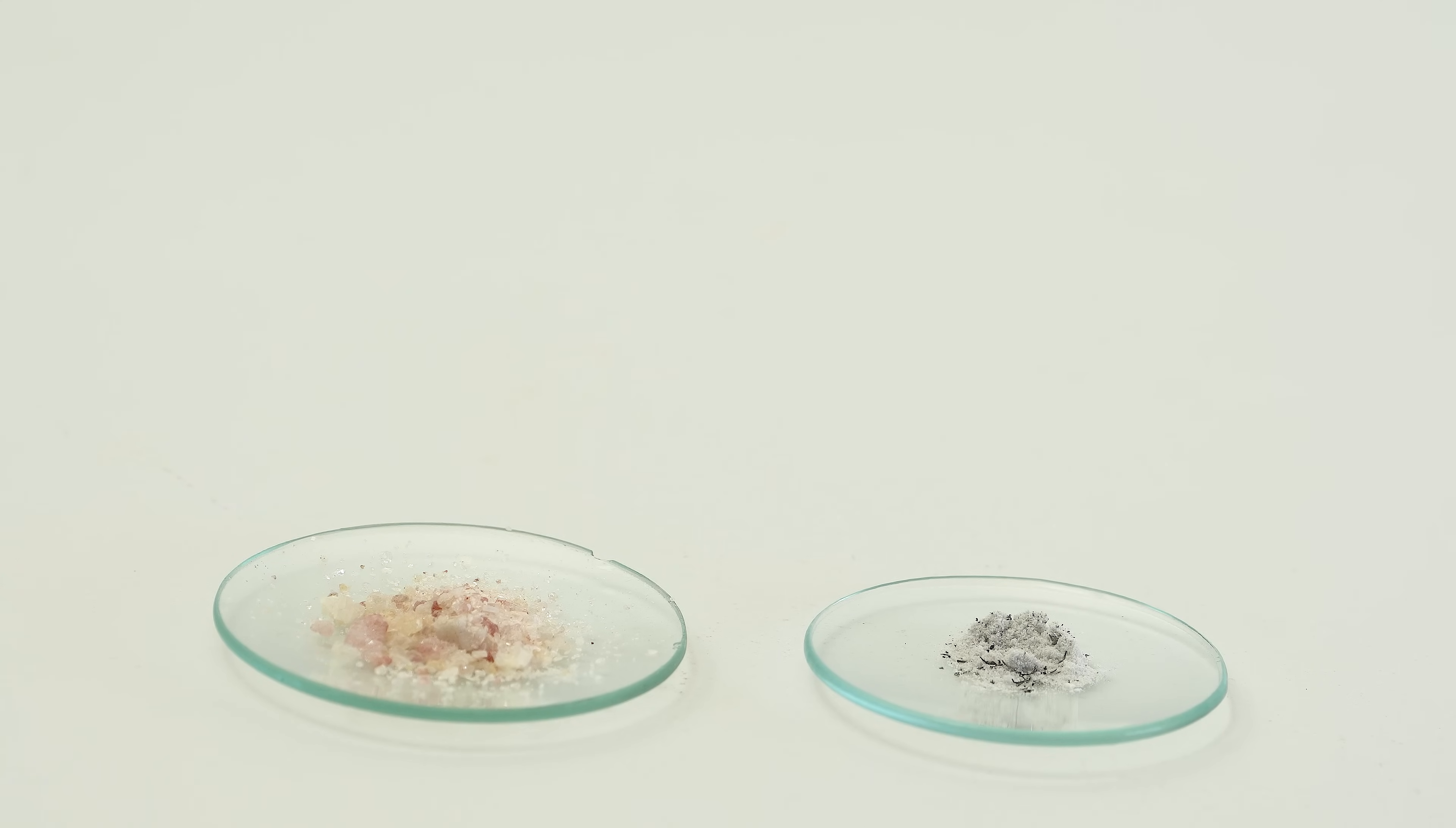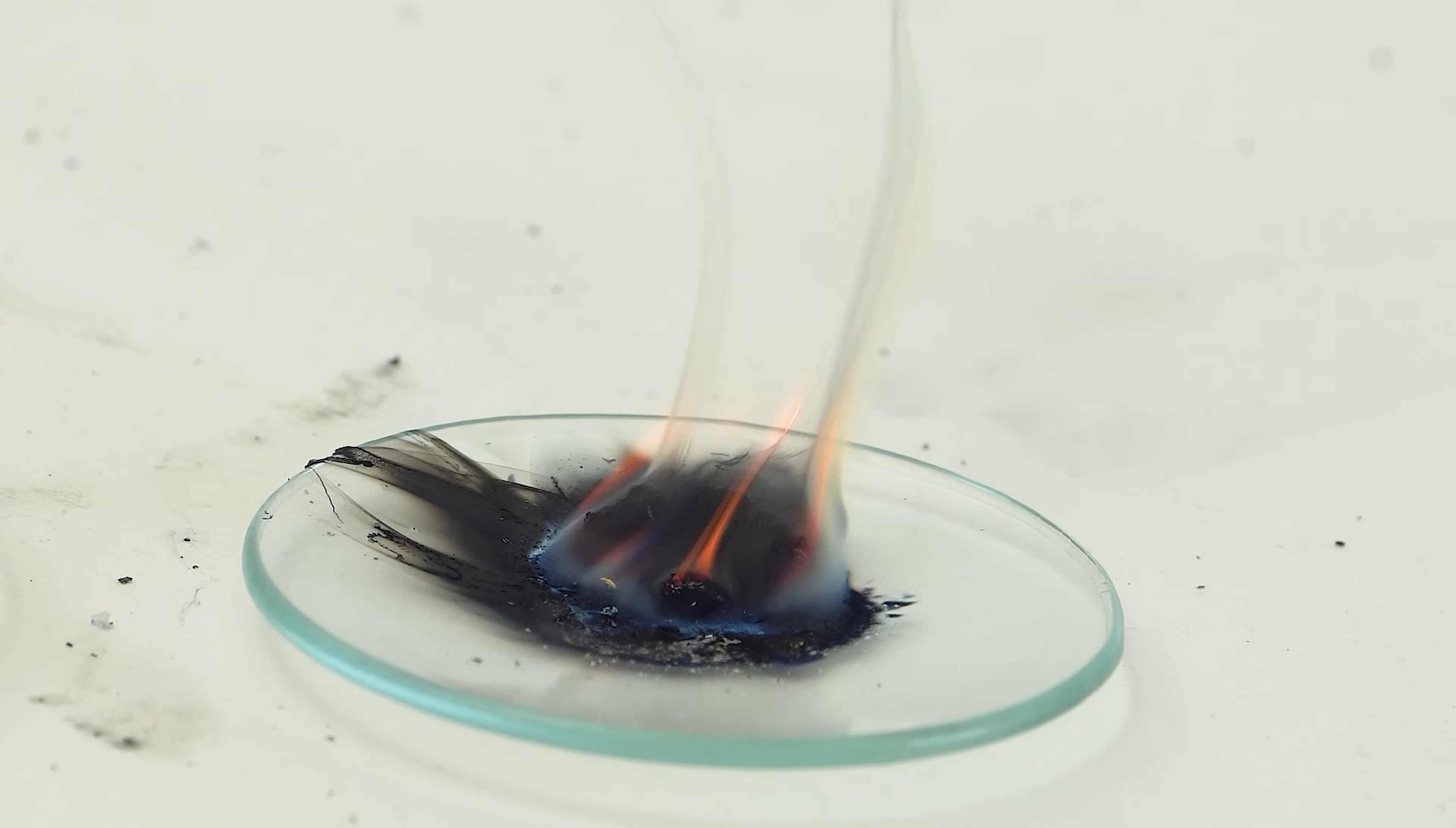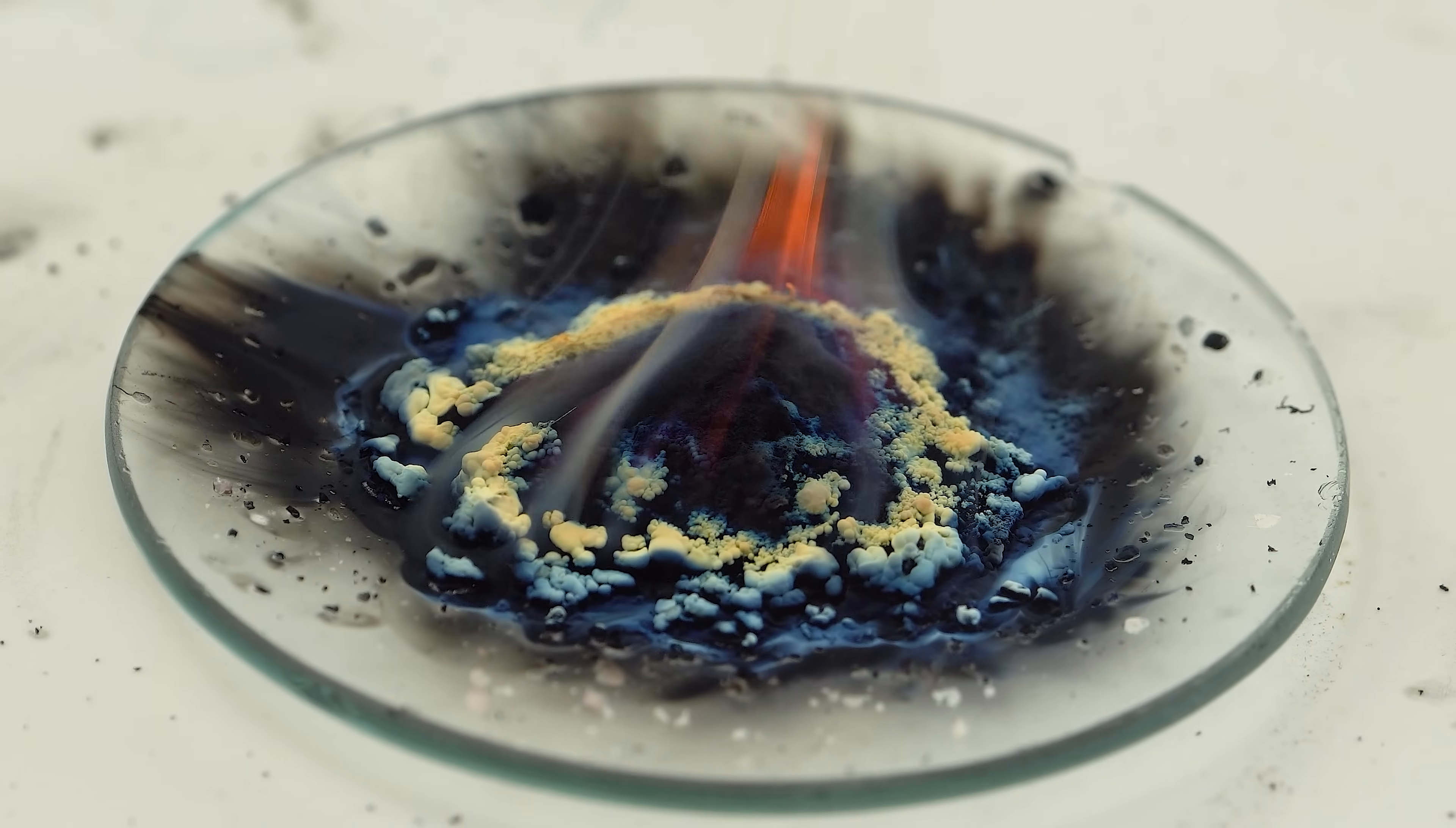Tungsten hexacarbonyl is a flammable substance. It ignites easily. Among other combustion products, we can clearly see yellow tungsten trioxide formed.